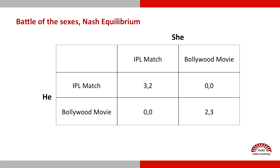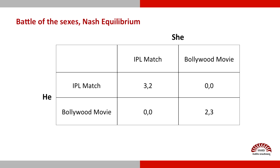The players are he and she and the payoffs are shown in the matrix here. The two actions are watching an IPL match or watching a Bollywood movie, and let's suppose that this is a married couple. We can see that he likes to watch IPL but he also wants to be with her. So the payoff in the first cell is 3 and 2 — he gets 2 for being with her and one more for watching what she likes to watch.